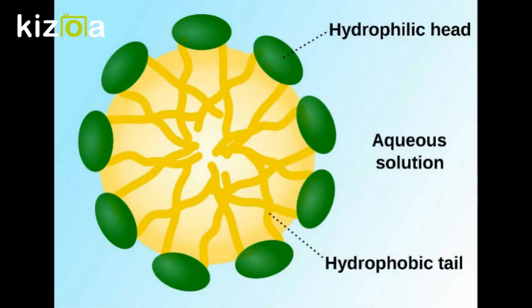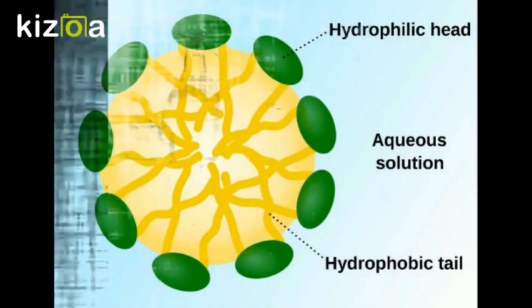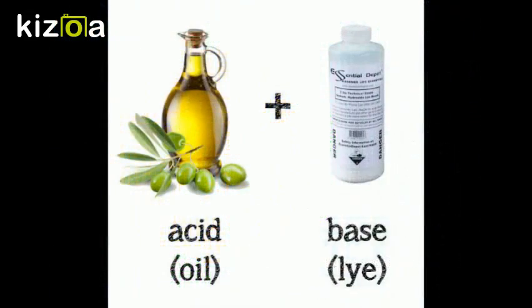So now we briefly know how surfactants work. But how exactly do all these chemicals react to make soap? Well, soap is made from a fat or oil molecule reacting with a strong base, such as lye.